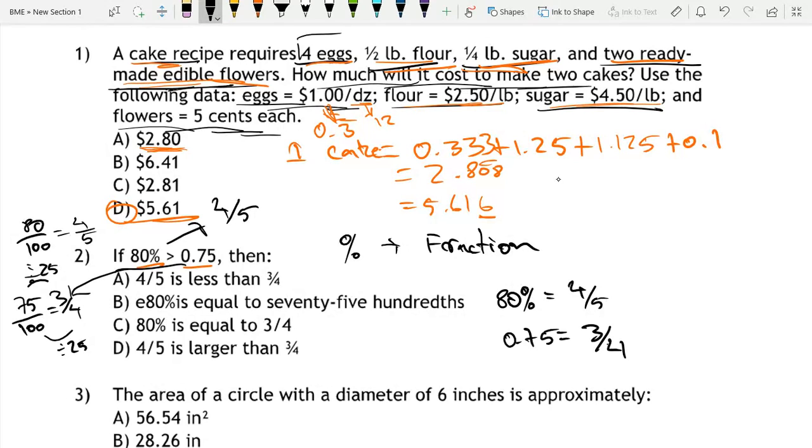So if we have 80% is greater than 0.75, then we would be saying 4 fifths and 3 fourths. So it's between these two right now, and we'd be saying it is larger because of this larger than sign. 80% is greater, so D.